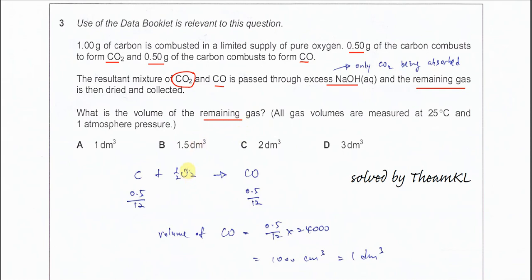First, we need to calculate the carbon with oxygen in limited supply forming CO. 0.5 gram over the molar mass - this is the mole of the carbon that forms CO. Because the mole of the carbon and the carbon monoxide is one to one ratio, the carbon monoxide will form the same amount.